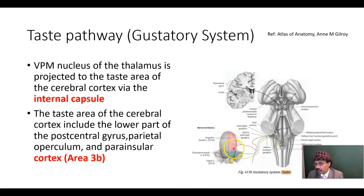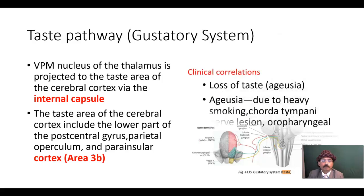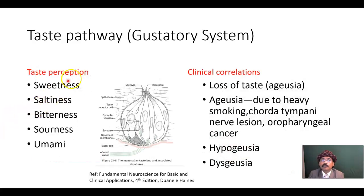To summarize the diagram: this is the facial nerve, this is the glossopharyngeal nerve, and this is the vagus nerve. This is the geniculate ganglion, the nodose ganglion for the vagus nerve, and the petrosal ganglion for the glossopharyngeal nerve. This is the solitary tract and solitary nucleus. Then it goes to the thalamus — either ipsilateral or contralateral — and from there via the internal capsule to the cerebral cortex. So the taste pathway runs from the receptor cell to the cerebral cortex.